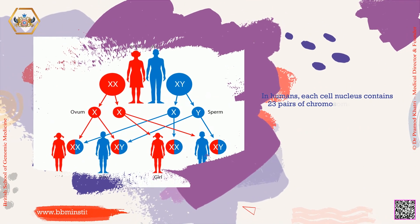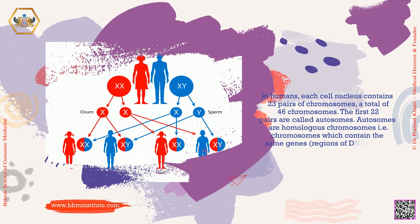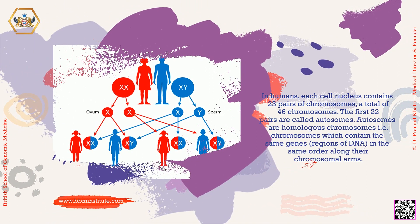In humans, each cell nucleus contains 23 pairs of chromosomes, a total of 46 chromosomes. The first 22 pairs are called autosomes. Autosomes are homologous chromosomes, that is, chromosomes which contain the same genes in the same order along their chromosomal arms.